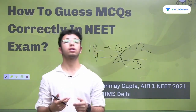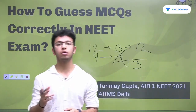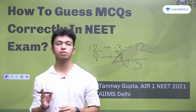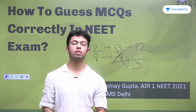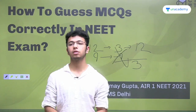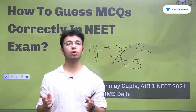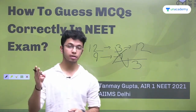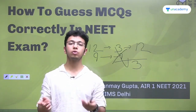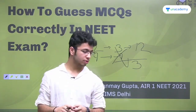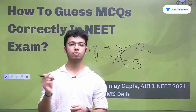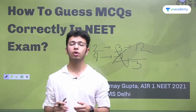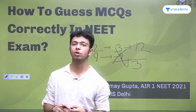So what to do instead of random guessing? A very important option for aspirants is elimination. You have 4 options in every NEET question — go through all of them. You might not know the correct one, but you might know which are incorrect. If you can find the 3 incorrect ones, you get your answer even without directly knowing it. This method can be used in physics, chemistry, and biology. You can also practice it during mock tests.